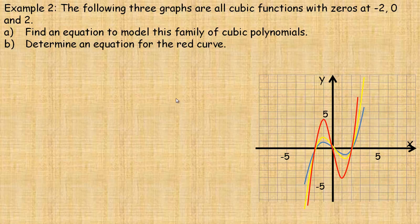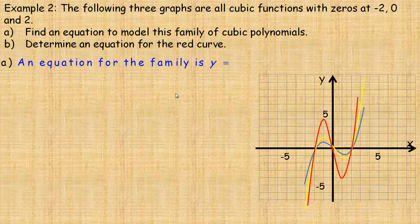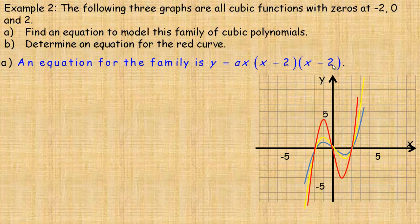In example 2, three graphs are all cubic functions with zeros at negative 2, 0, and positive 2. An equation for this family could be y equals ax times (x plus 2) times (x minus 2). The x factor comes from the zero at 0; the (x plus 2) factor comes from the zero at negative 2; and (x minus 2) comes from the zero at positive 2. Being cubic, you expect three linear factors. The value a is a stretch factor — it makes the graph steeper or flips it upside down if a is negative.